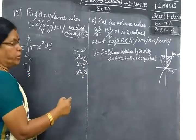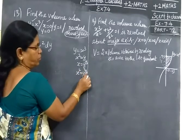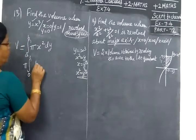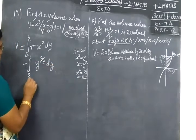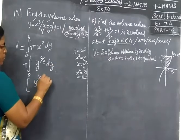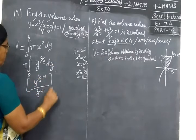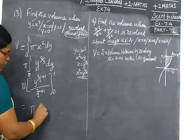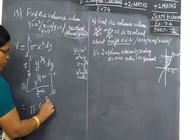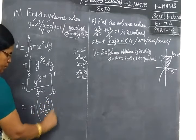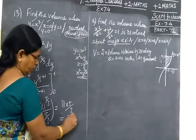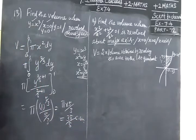Now for x², we substitute y^(2/3). Now integrate: π ∫ y^(2/3) dy from 0 to 1. This becomes π [y^(5/3) / (5/3)] from 0 to 1. That's π × (5/3), which equals 3π/5 cubic units. Now we see the answer, so 3π/5 cubic units. This answer is correct.